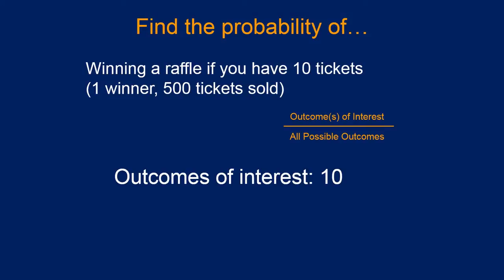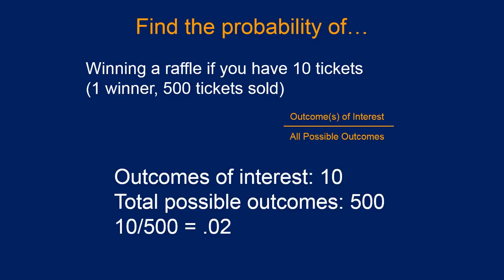Figuring this out is pretty easy. You have 10 tickets and there's 500 tickets sold, so there are 10 outcomes of interest, total possible outcomes. Any one of the 500 tickets might win. The probability of you winning is 0.02.